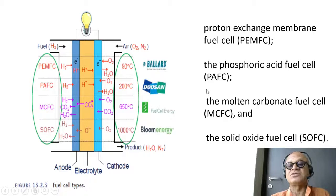That's phosphoric acid. The molten carbonate fuel cell MCFC operates at 650 degrees centigrade and it uses actually a bicarbonate or some form of carbonate. That's why it's called molten carbonate.